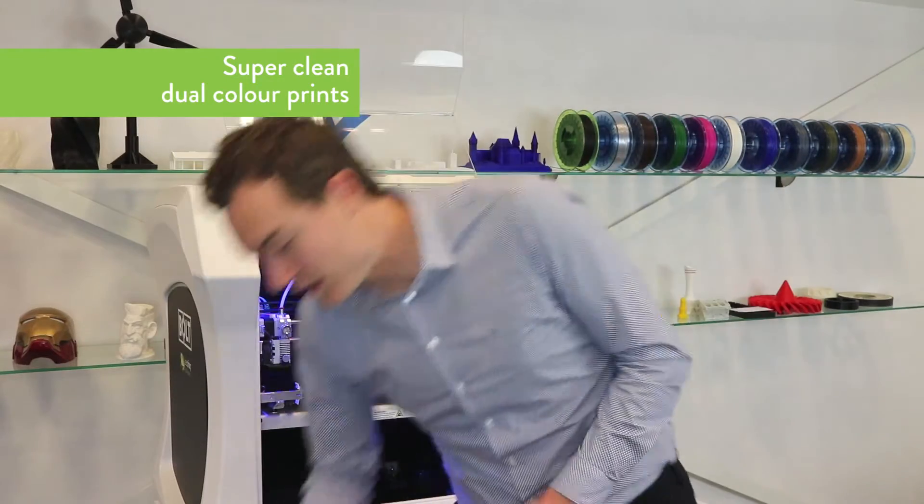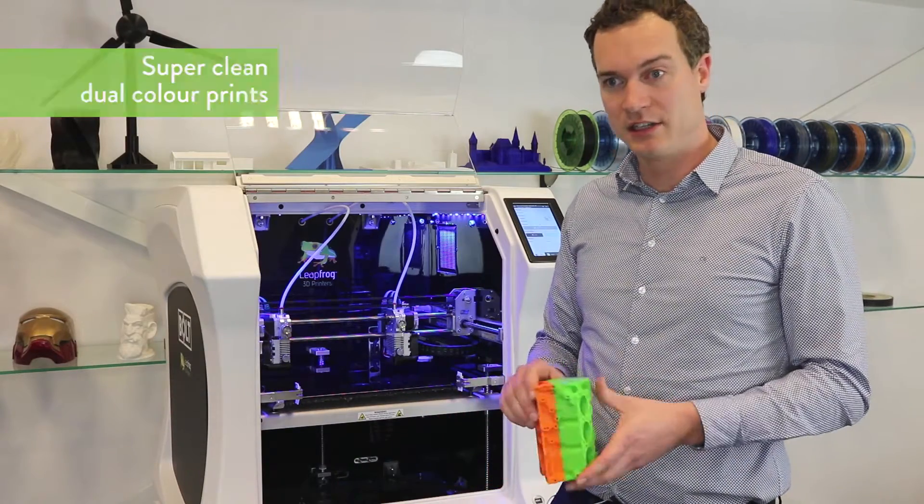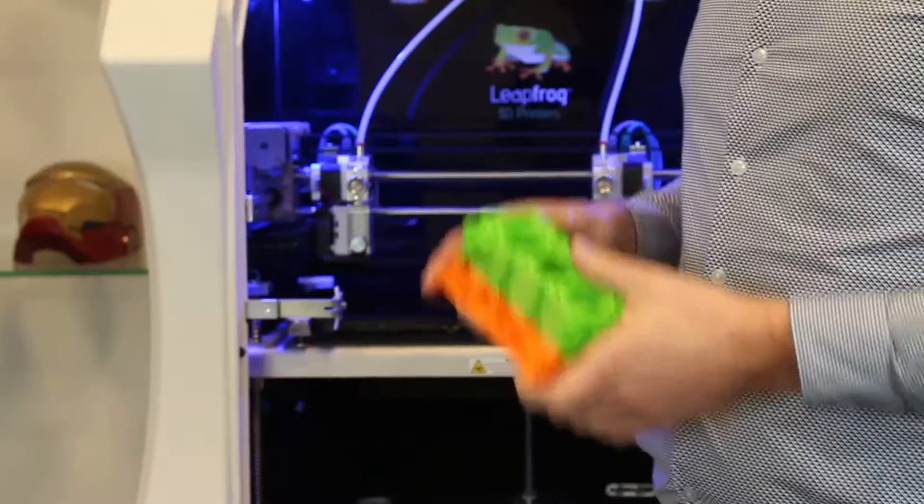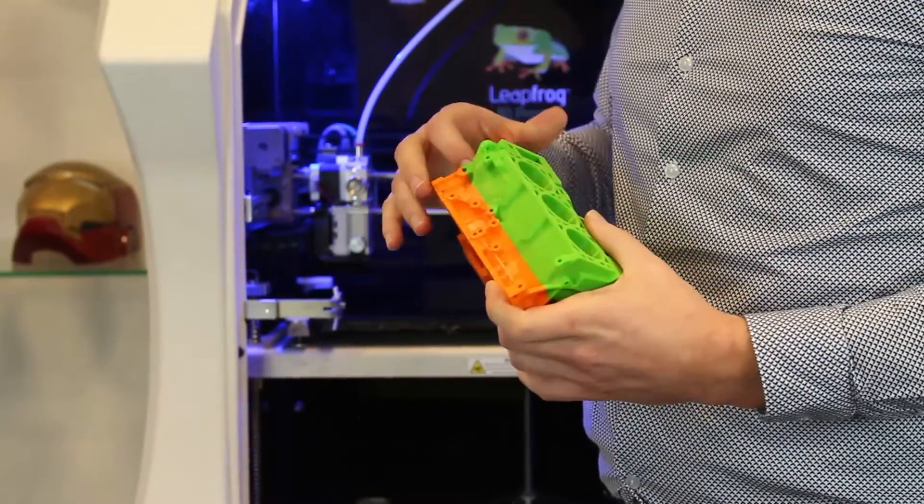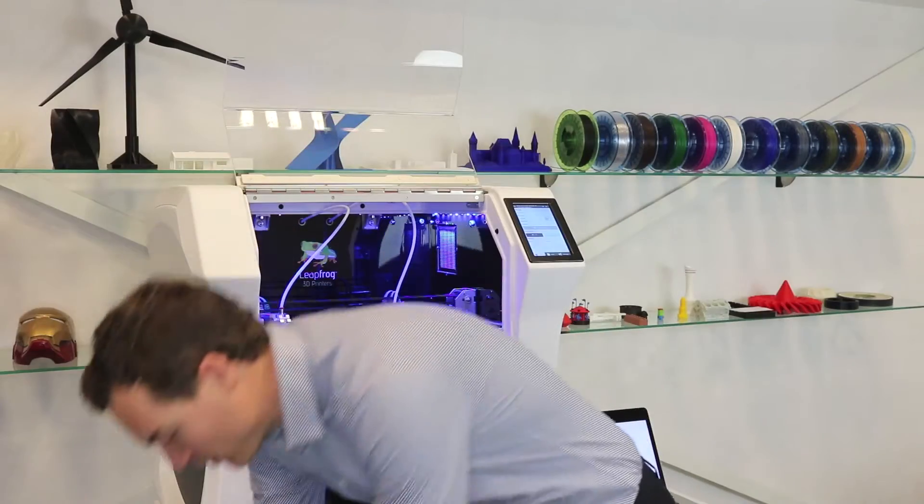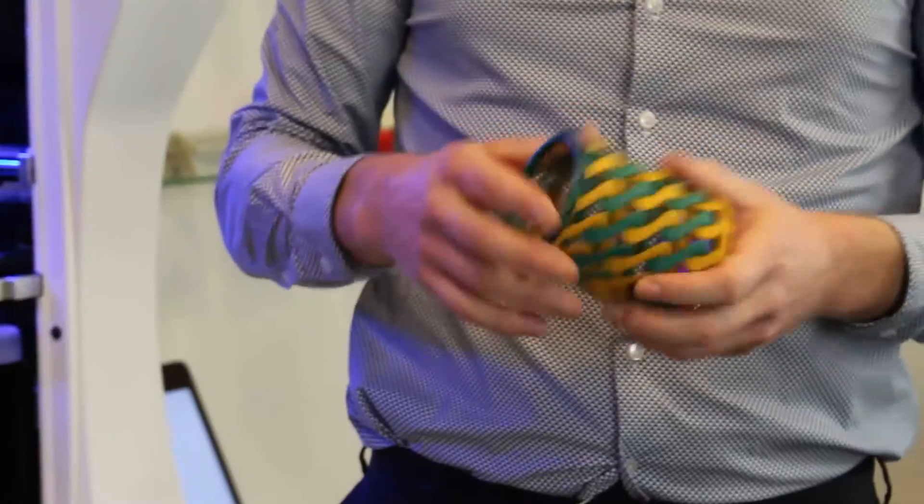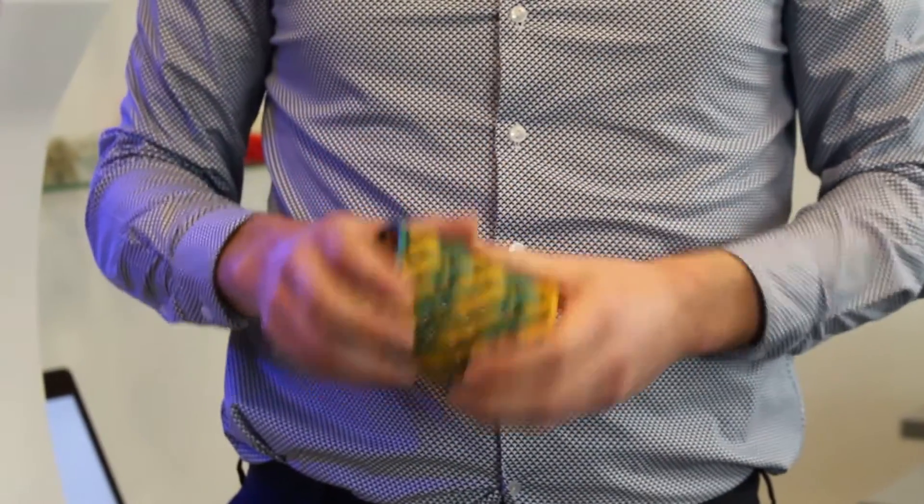For instance, look at the super clean cut between the colors at this engine block. You can really see there's no oozing and there's a perfect separation between the colors. Also, more challenging prints like this vase are no issue for the Bolt.